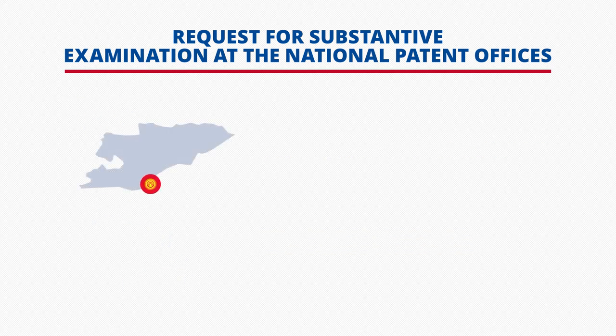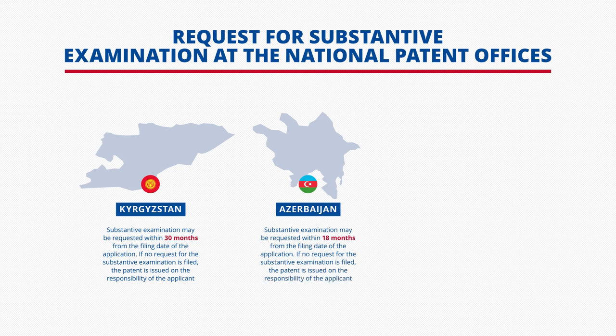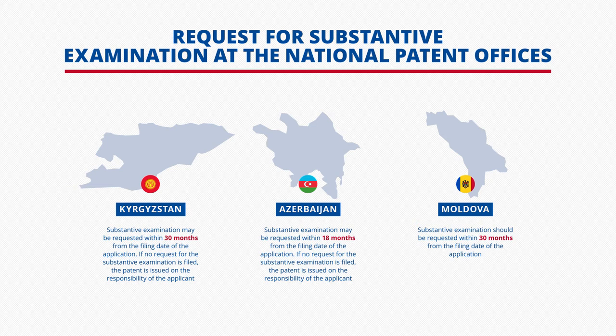Let us now consider the following group of countries — Kyrgyzstan, Azerbaijan, and Moldova — in which the timescale for filing a request for a substantive examination is 18 or 30 months. It should be noted that in Kyrgyzstan and Azerbaijan, the patent can be issued at the responsibility of the applicant without a request for the substantive examination.